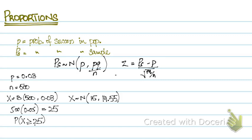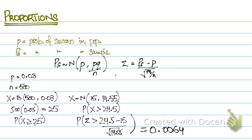Now, probability of X greater than or equal to 25 can also be written as probability of X greater than 24. So after continuity correction, this will become probability of X greater than 24.5. And this becomes Z greater than 24.5 minus 15 upon root of 14.55. And after solving this, your final answer becomes 0.0064.